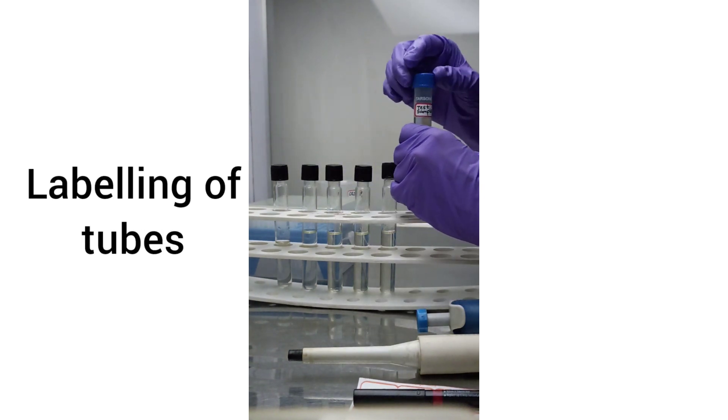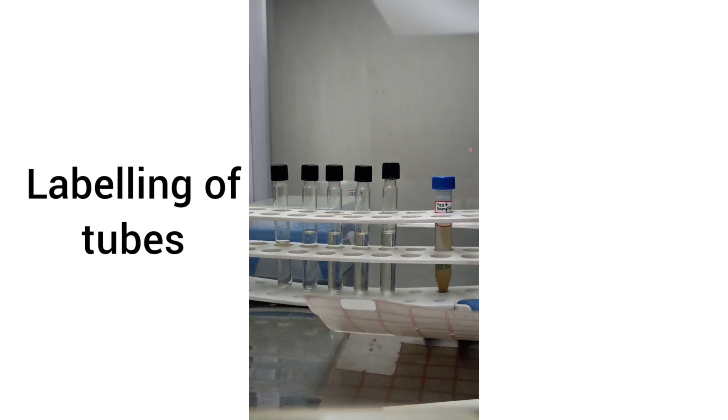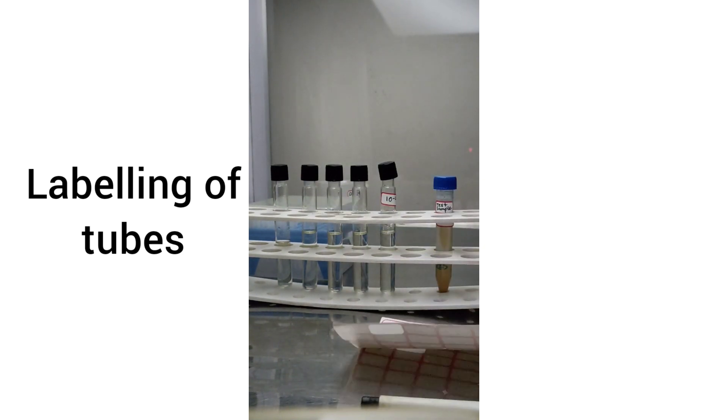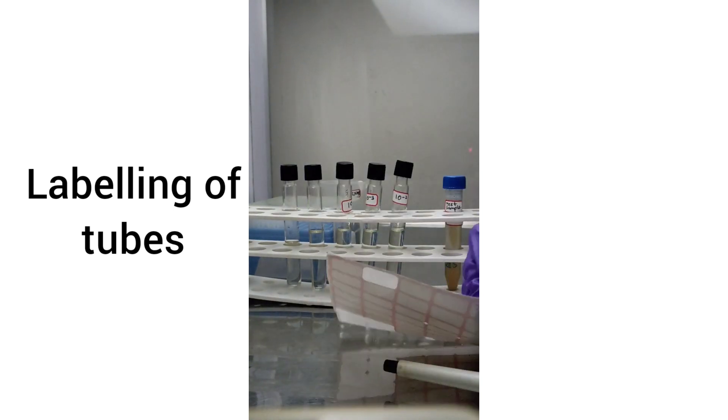Labeling of tubes. Take the test sample which is 10 times diluted and label it as 10 raised to minus 1, and other diluent tubes 10 raised to minus 2, 10 raised to minus 3, 10 raised to minus 4, and 10 raised to minus 5.